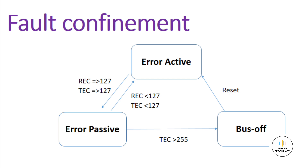The last state is the bus-off state. If the transmit error count of the CAN controller exceeds 255, then it goes to a bus-off state. In this state, the CAN node disconnects itself from the CAN bus and can no longer transmit data or raise any error flags. This state is triggered by the node's error detection and fault confinement mechanism, and can happen due to various reasons such as electrical faults, excessive error rates, or other issues that disrupt proper CAN communication.